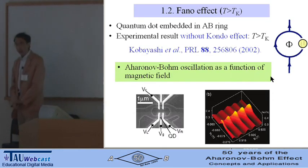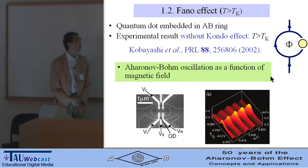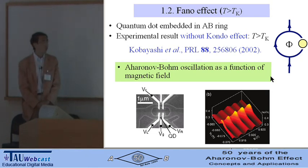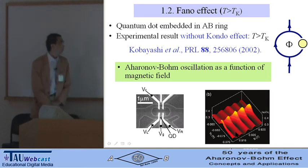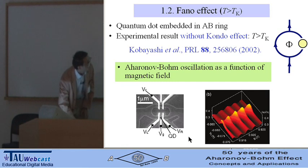So what happened when the quantum dot is embedded in an AB ring? There is an experimental result without Kondo effect by Kobayashi and co-workers. Using this sample, by changing the magnetic field, they observed the AB oscillation as a function of the magnetic field.